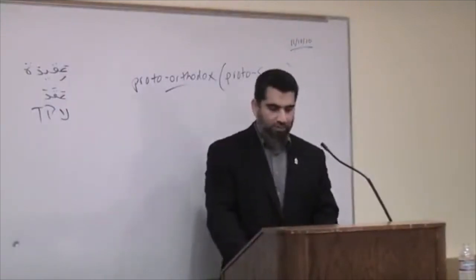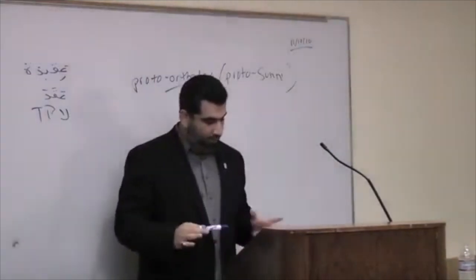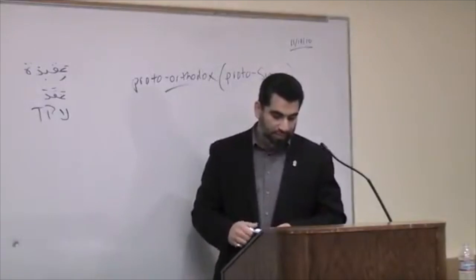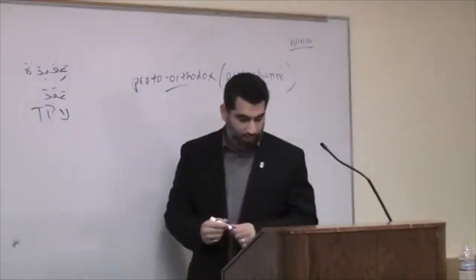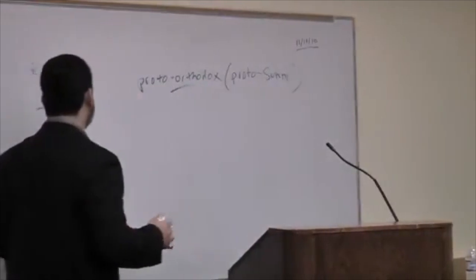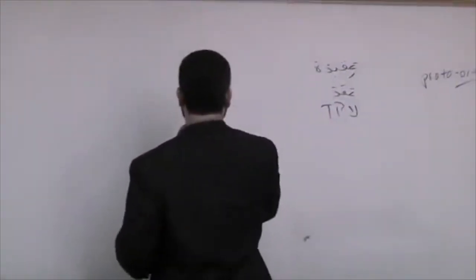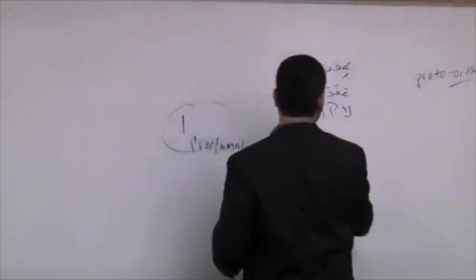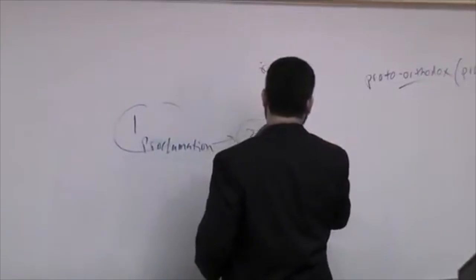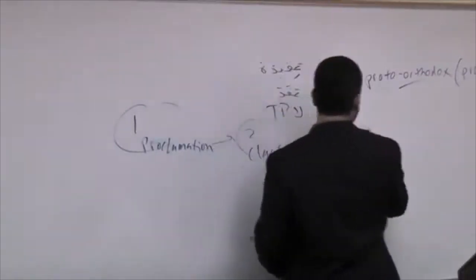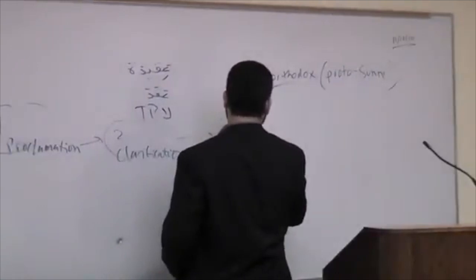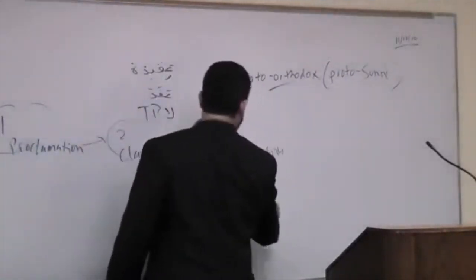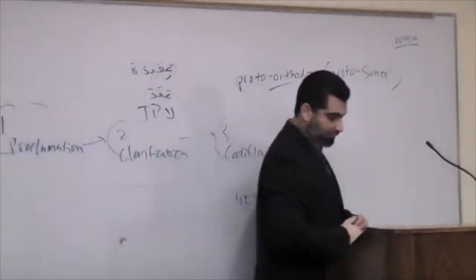This is before creeds were codified. We call them proto-orthodox versus the heterodox, heteros in Greek meaning other. This is considered to be a deviant position. Orthodoxy, straight thinking. Heterodoxy, deviant teaching. So I'll utilize this term proto-orthodoxy which will be used interchangeably with proto-Sunni. Proto-Sunni scholars are Muslim scholars who represented what eventually would become the standard Sunni belief, forerunners of Islamic orthodoxy.